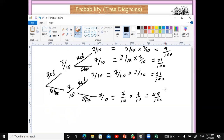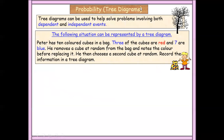So that's how we go about working out the probability using the tree diagram. This was the situation where he puts back the cube into the bag. Now, what would happen if he chooses not to put the cube back in the bag? Let's look at that possibility.